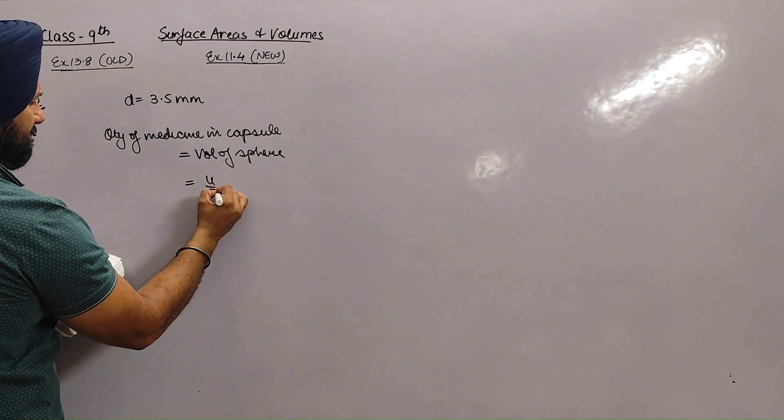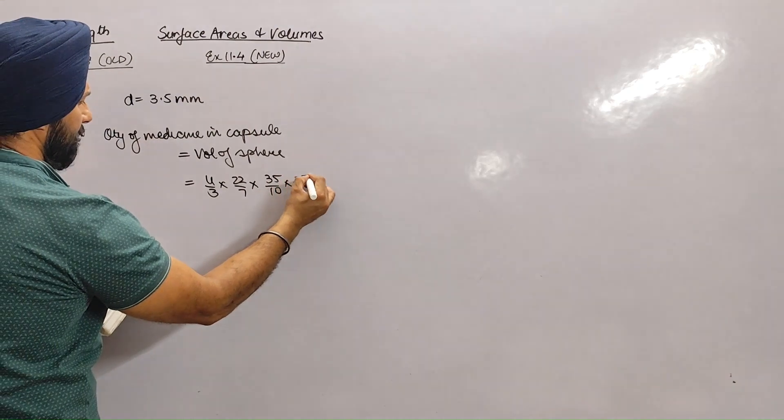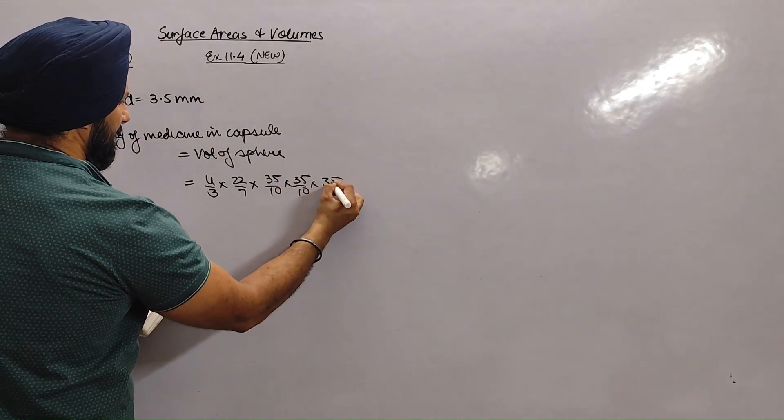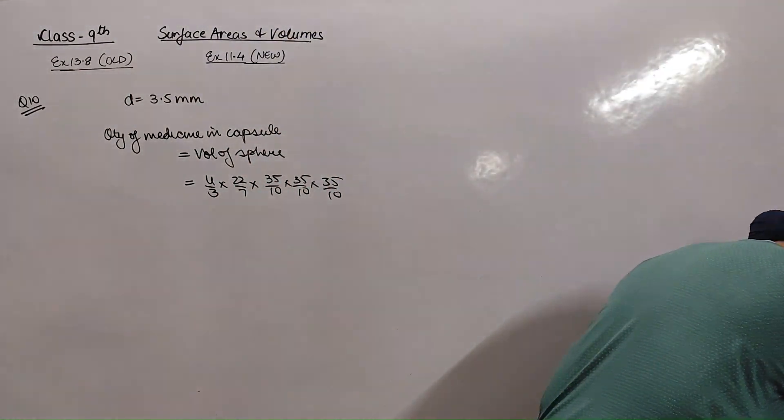4 by 3 pi r cubed, 35 by 10, 35 by 10, and 35 by 10. I hope that you understood this. So very good, very good.